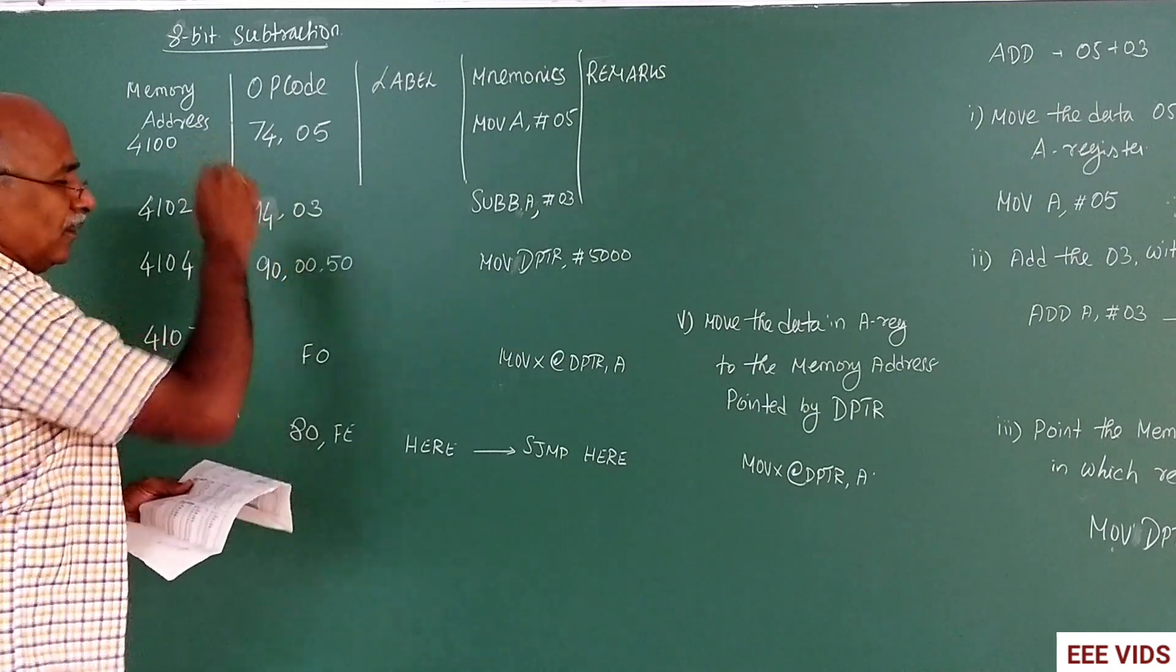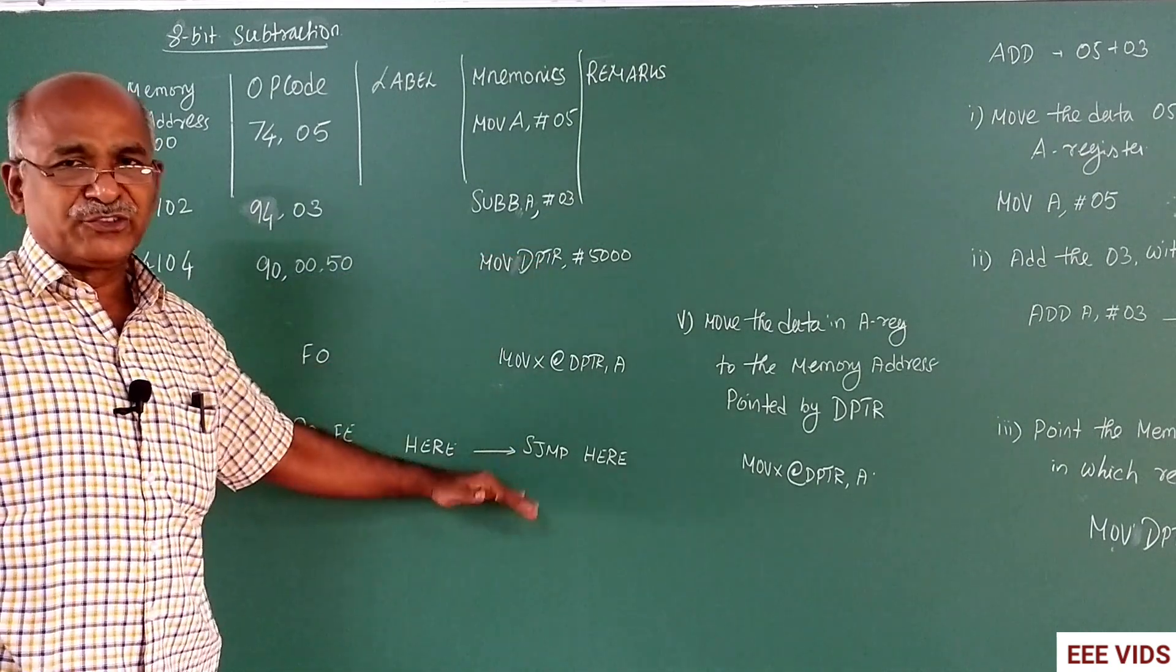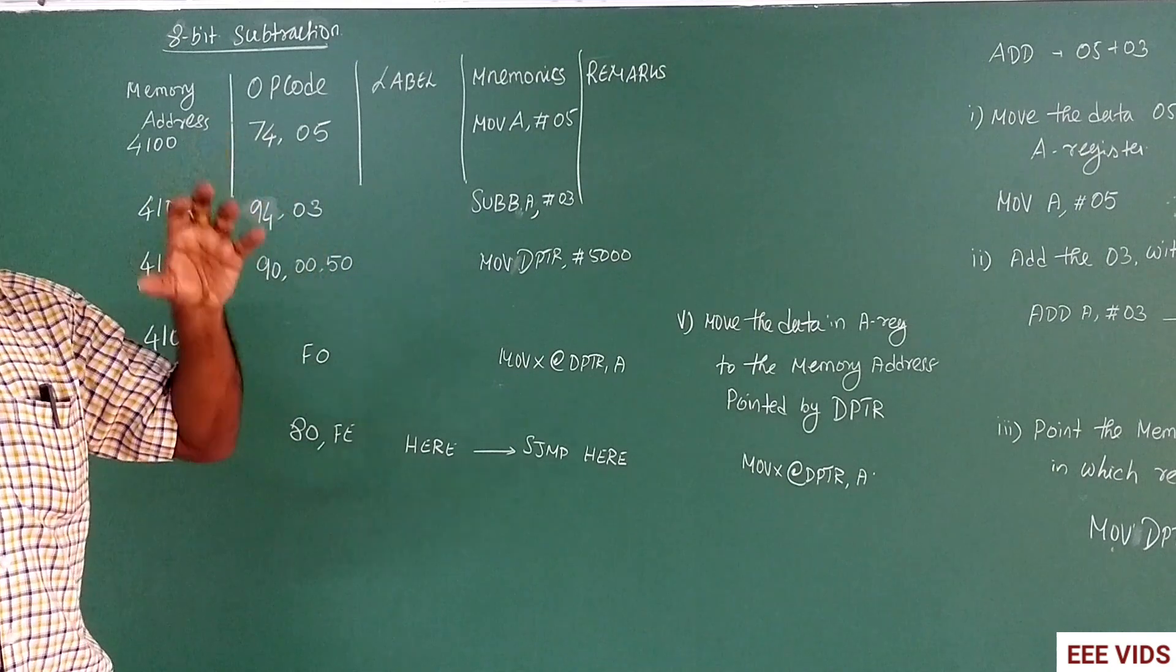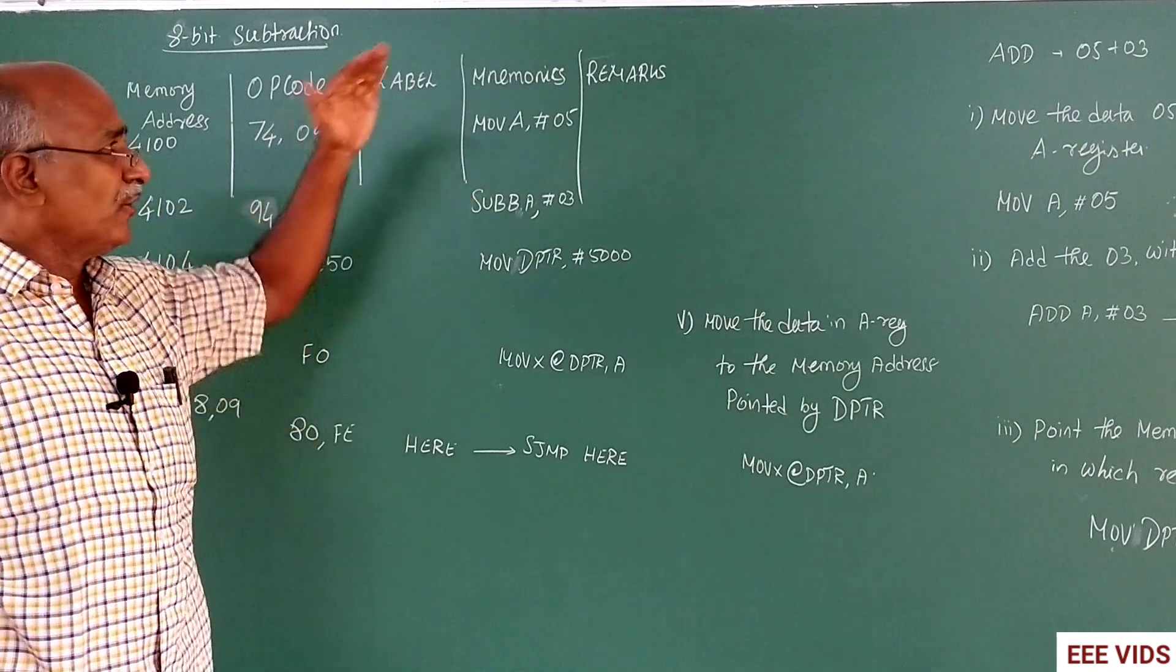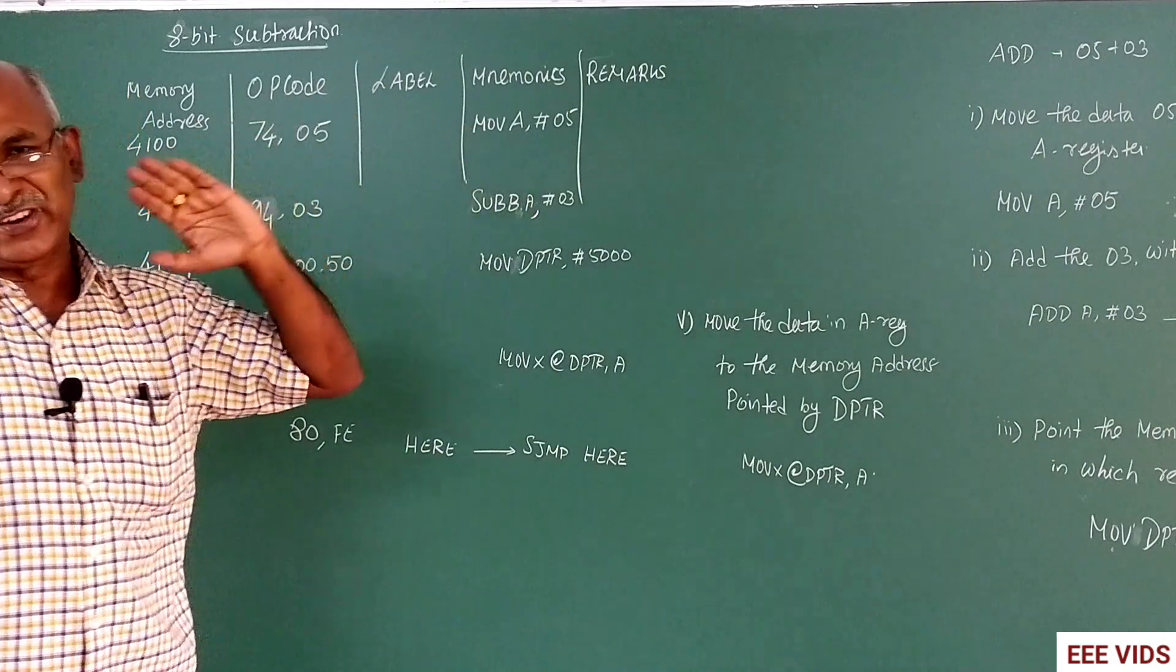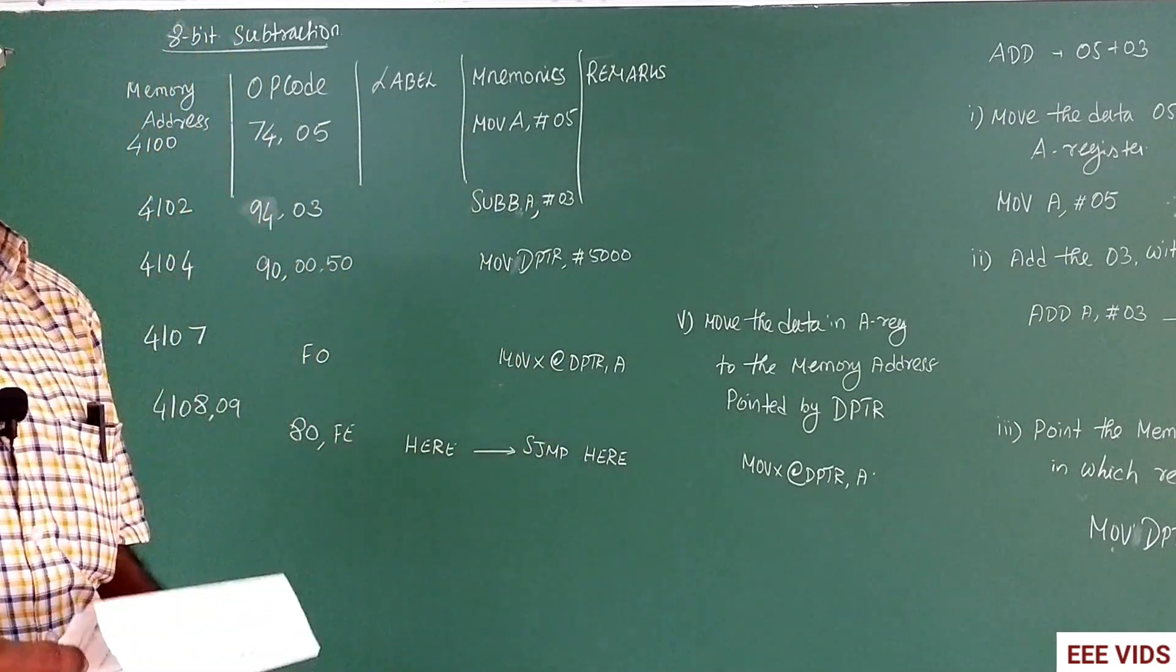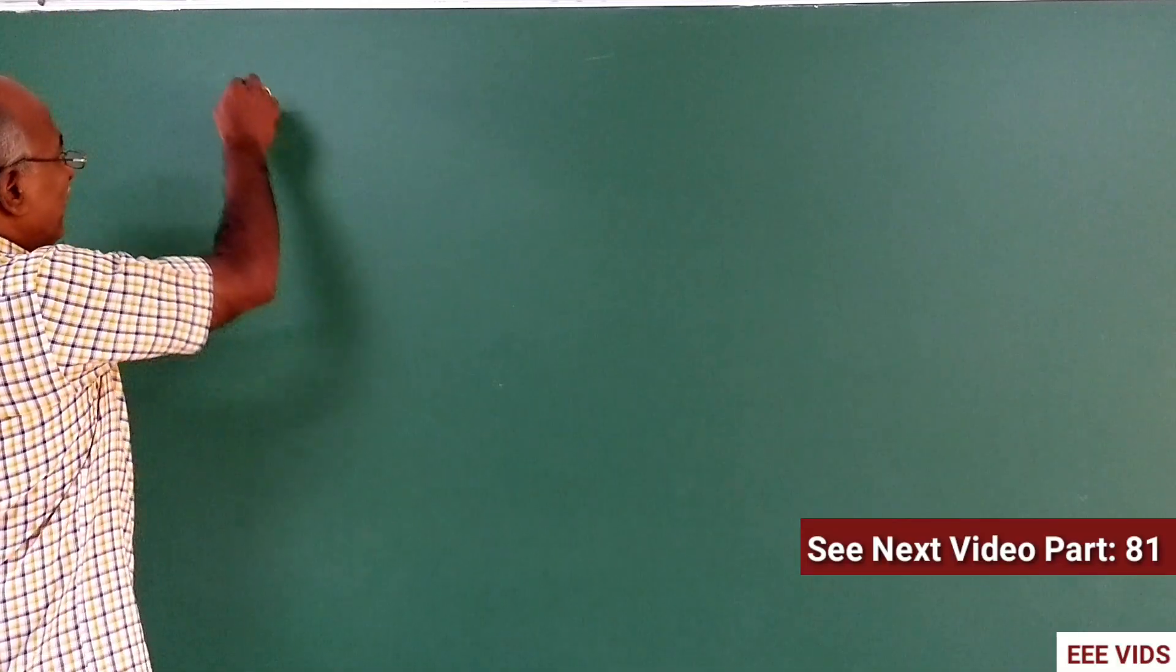In the 5000 memory location, the result 02 is obtained. This is subtraction. 05 is moved to accumulator, 03 is subtracted. To subtract, we use SUBB instruction. This is the subtraction instruction and 8-bit programming.